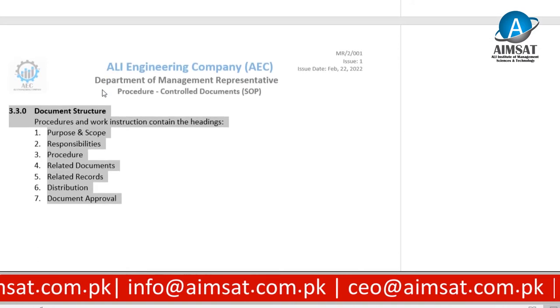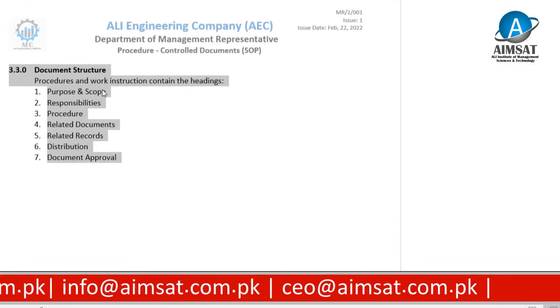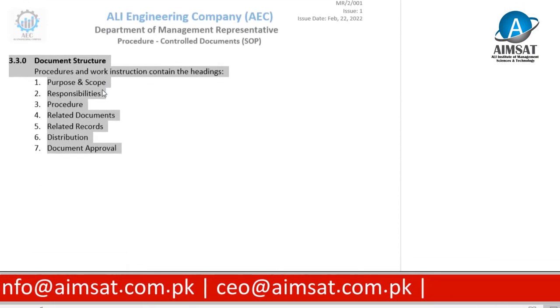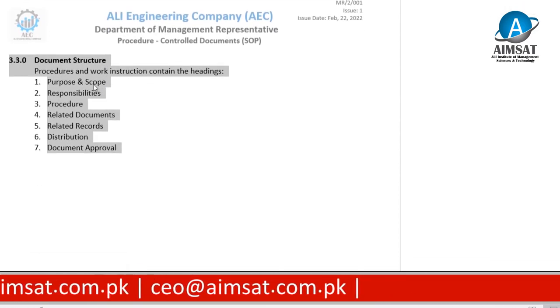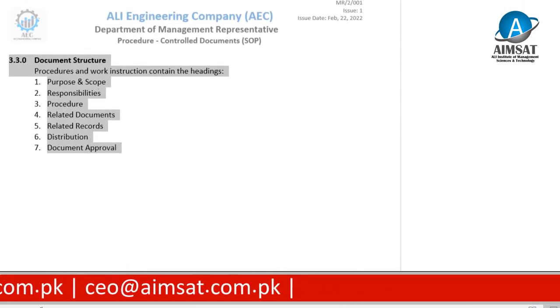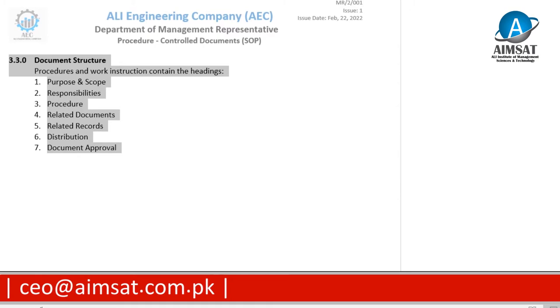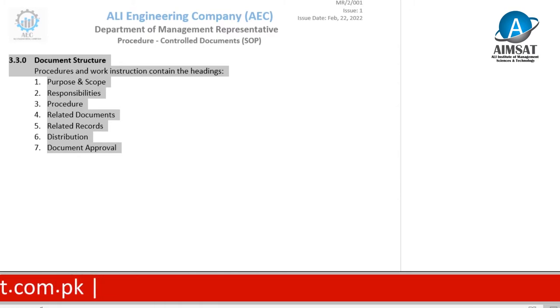Document structure: procedures and work sections contain the following headings — purpose and scope, responsibilities, procedure, related documents, related records, distribution, and document approval.